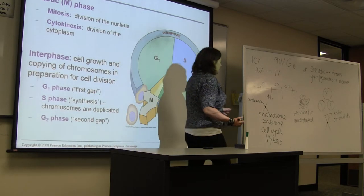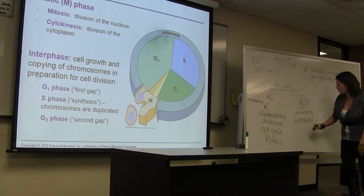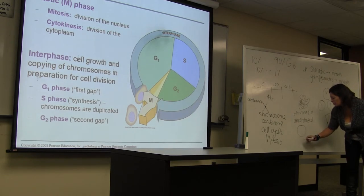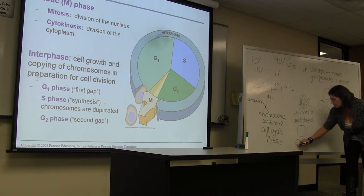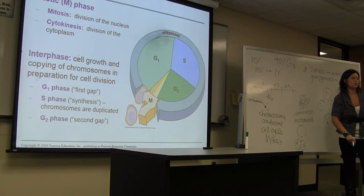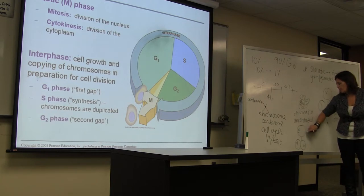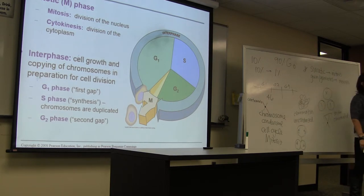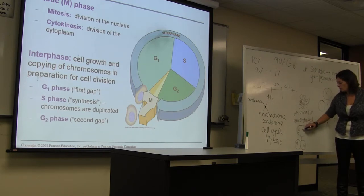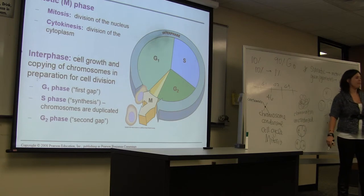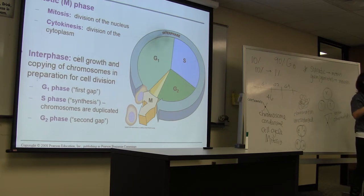In mitosis, all you're doing is separating the DNA from one another. Then cytokinesis is the actual dividing that makes the two individual cells. So mitosis is just separating the DNA into opposite sides, and cytokinesis is where you actually get the cell pinching off and actually becoming two individual cells.